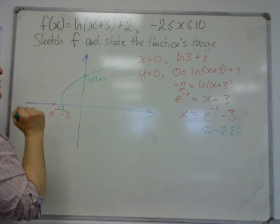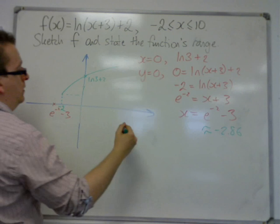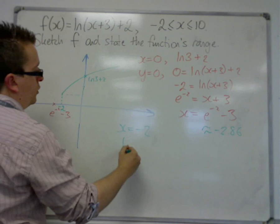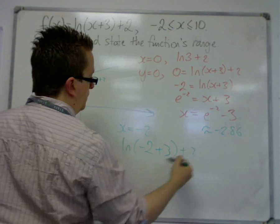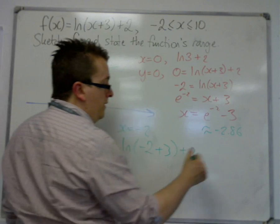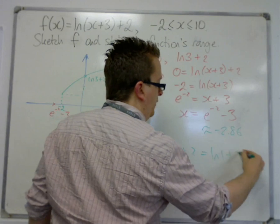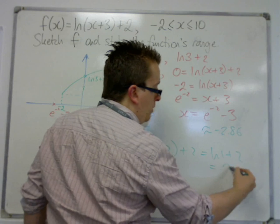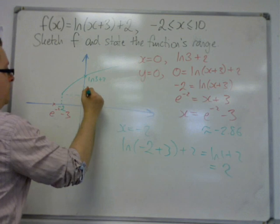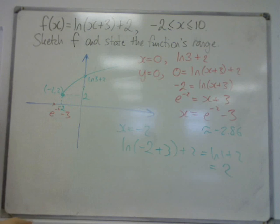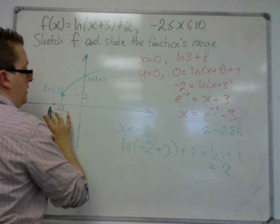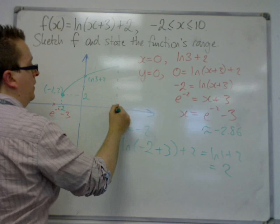So it's starting off at minus 2. So when x is minus 2, we get log of minus 2 plus 3 plus 2. Well, minus 2 plus 3 is 1. So this is log of 1 plus 2. And log of 1 is 0, so that's just 2. So this is the coordinates minus 2, 2, that point. And then it continues up to 10.